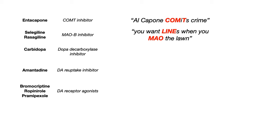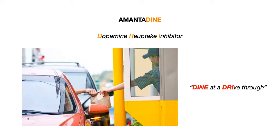Carbidopa — you don't need a mnemonic because the drug ends in '-DOPA.' So carbidopa is a DOPA decarboxylase inhibitor. Sometimes less is more. For amantadine, look at the end of the word — it has 'dine' in it. Remember that amantadine is a dopamine reuptake inhibitor. So you 'dine at a drive-thru' — amantadine, dine at a drive-thru, and D-R-I stands for dopamine reuptake inhibitor.